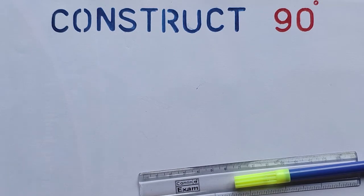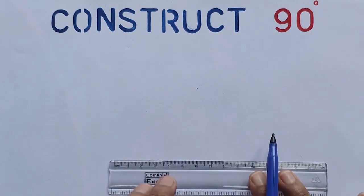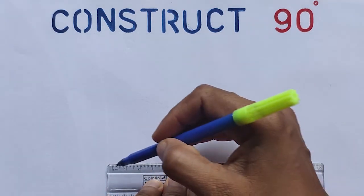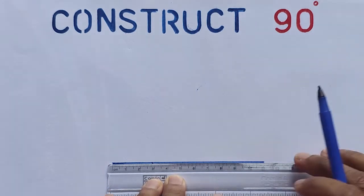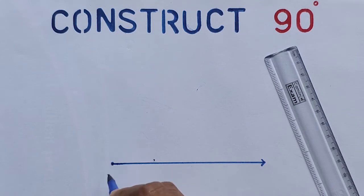Hi students, in this video we will study how to construct 90 degrees. For that, we must recall how to construct 60 as well as 120 degrees. First, let's draw a ray. I'm naming this ray as BC.